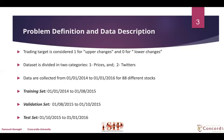Our trading target is considered 1 for upward changes and 0 for downward changes. The dataset is divided into two categories: prices and tweets. Data are collected from 1st January 2014 to 1st January 2016 for 88 different stocks. Our data are divided into three parts.